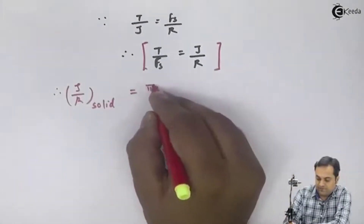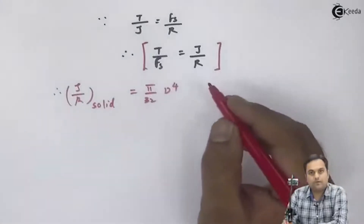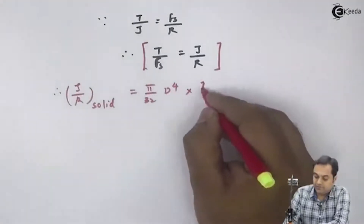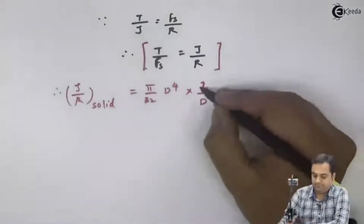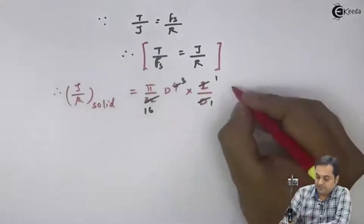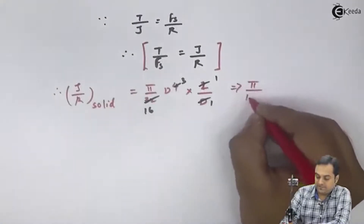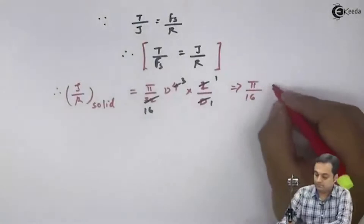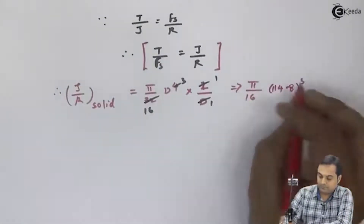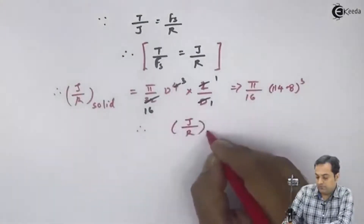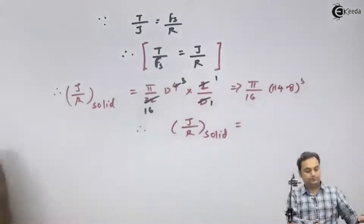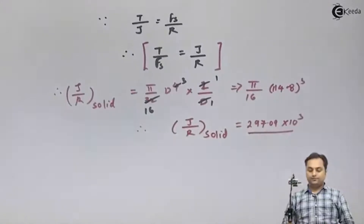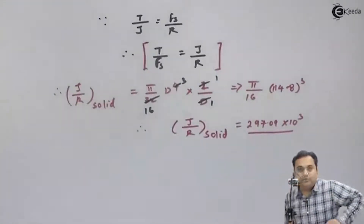For the solid shaft, J/r = (π/32 × D⁴) × (2/D), which simplifies to π/16 × D³. Substituting D_s = 114.8 mm and computing the cube: J/r for the solid shaft equals 297.09 × 10³ mm³. This value of J/r for the solid shaft will equal J/r for the hollow shaft.